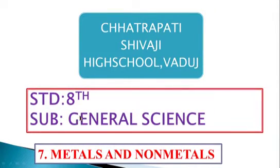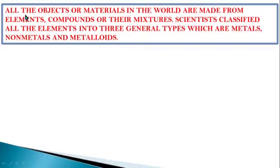Namaste students. Today I am going to teach you General Science, Chapter 7: Metals and Nonmetals. All the objects or materials in the world are made up from elements, compounds, or their mixtures.